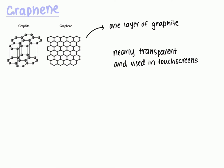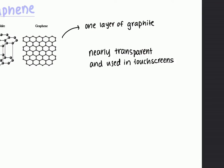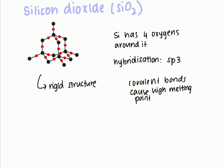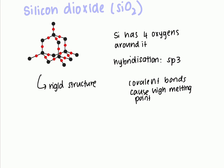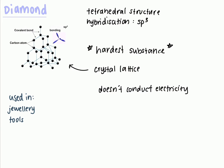Lastly, we have diamond. Diamond has a tetrahedral structure, as you can see here, and this allows it to have a hybridization of sp3 — it has four domains. Diamond is known to be the hardest substance out of the four allotropes we've looked at. It also has a crystal lattice from the way the tetrahedral structures lay above each other. Because diamond does not have any delocalized or free-moving electrons, it does not conduct electricity at all.